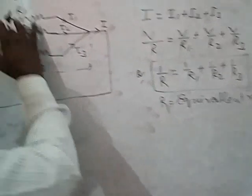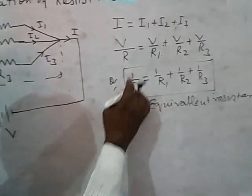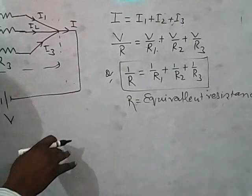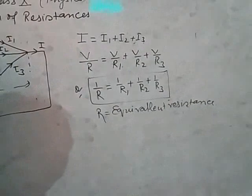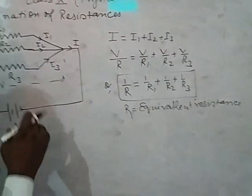Equivalent resistance means if we remove these three resistances and put R ohm, it will do the same work that all three together are doing. That's why we call it equivalent resistance.